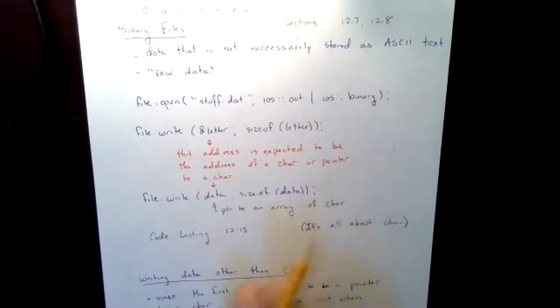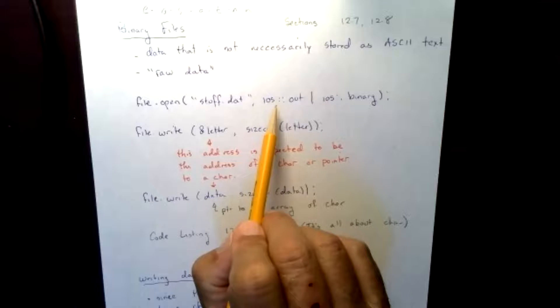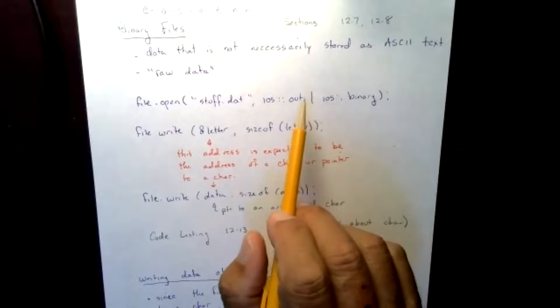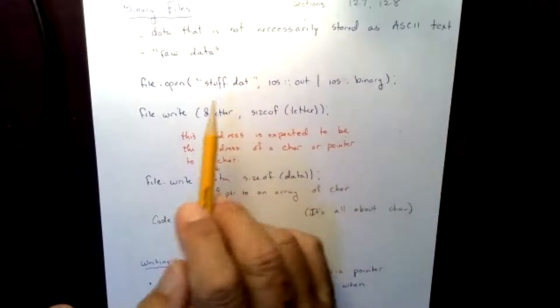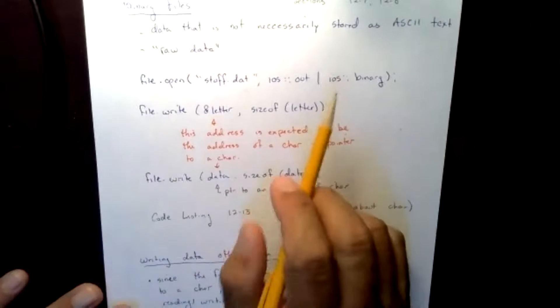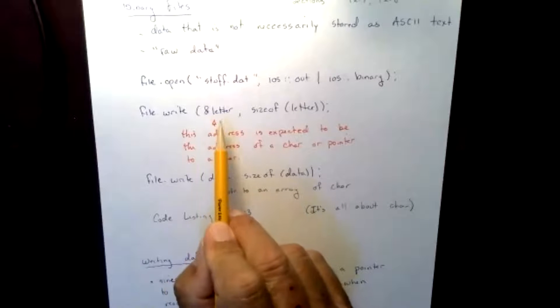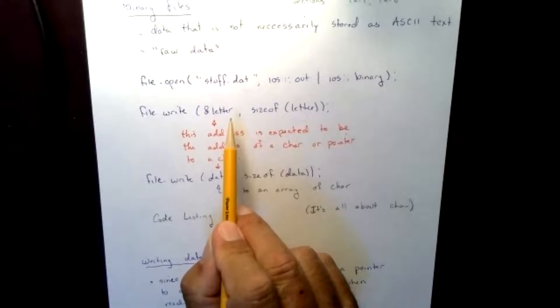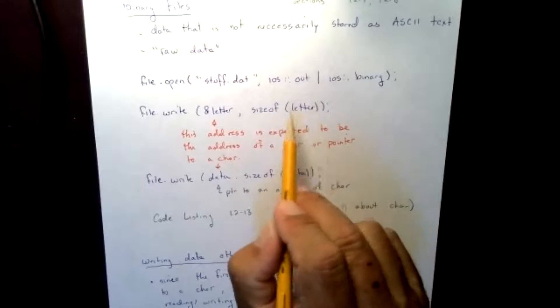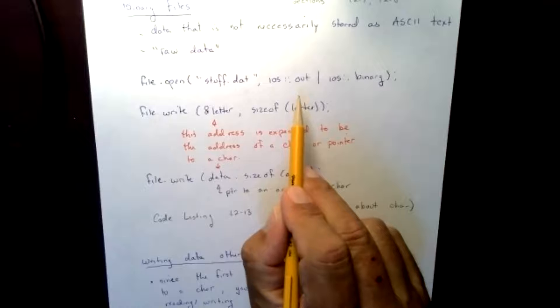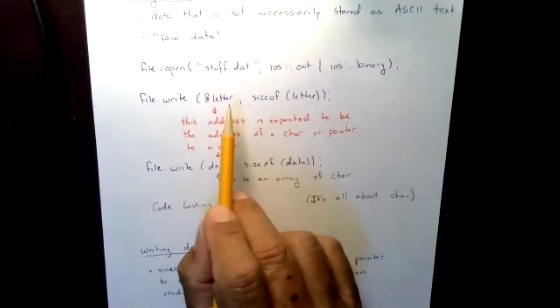When I want to store something in binary, my syntax is going to be file.write. You notice that letter, if I put a data type in there, it would be char letter. So this is the address of the letter that I want to write to the data file. I also need to follow it up with size. There is a function called sizeof that will determine that this letter is a type char and needs to be stored in a two byte block.